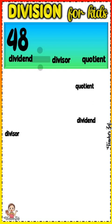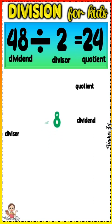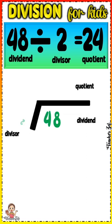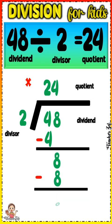48 divided by 2 equals 24. 4 divided by 2 equals 2. 2 times 2 equals 4. 4 minus 4 equals 0. Bring down 8. 8 divided by 2 equals 4. 4 times 2 equals 8. 8 minus 8 equals 0.